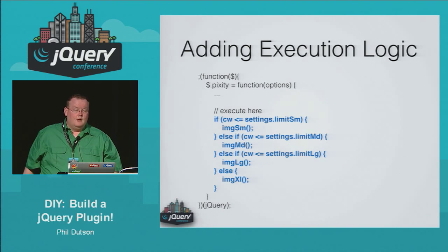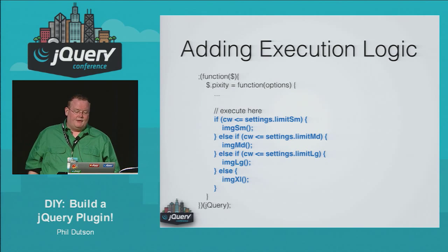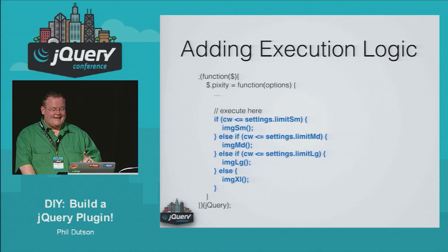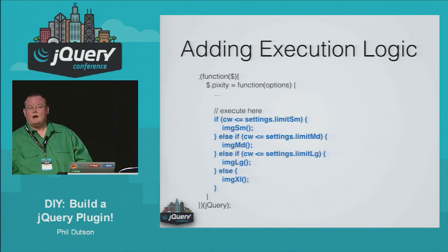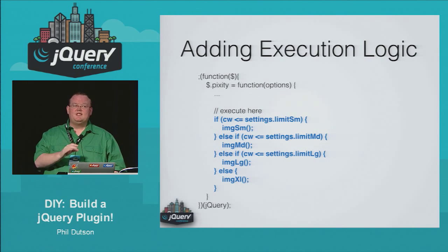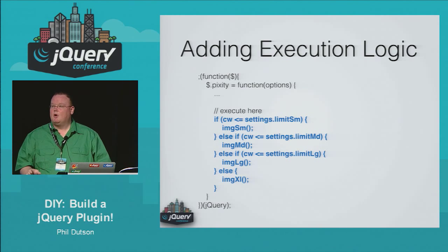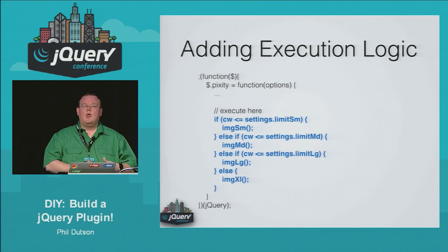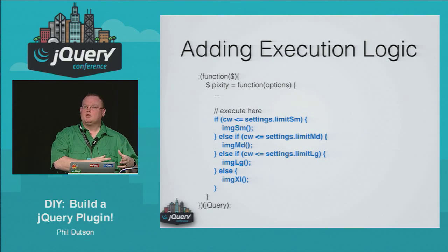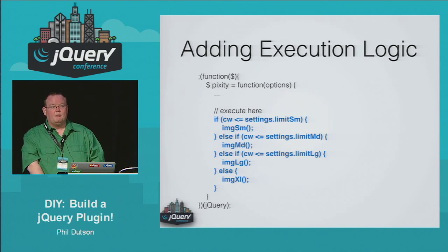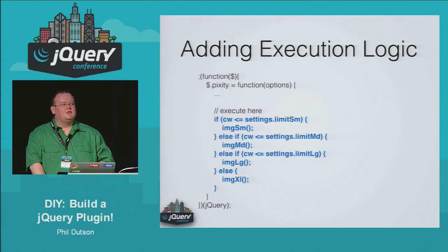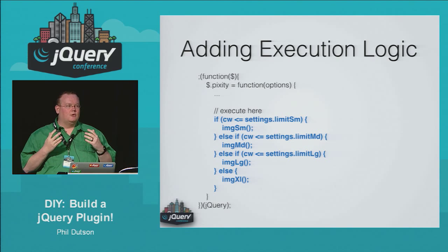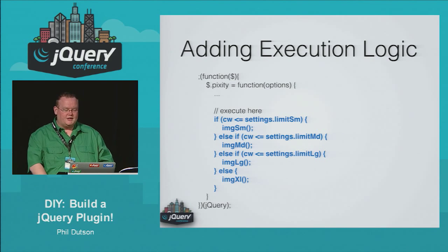Then the last thing we need to do is add the execution logic. Where the if statement was at the bottom of the function before, I've added it here. You can see it now says settings.limitSmall instead of just limitSmall — note that difference. The reason it changed is because we've pre-set things via extend and want developers to pass in their own values — we pull the value from the extend function using settings. It's very important to remember to use settings.whatever-you-named-your-variable so you get the correct one, and don't bang your head against your desk wondering why nothing's working.